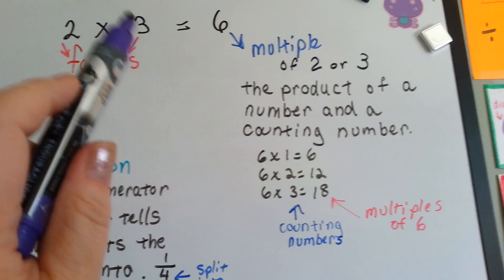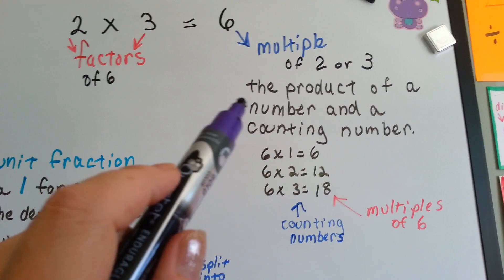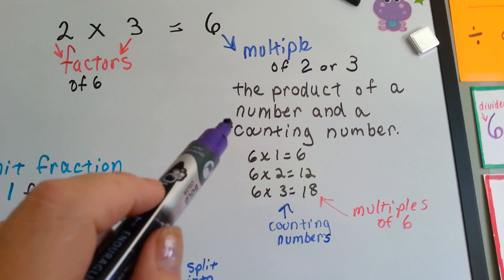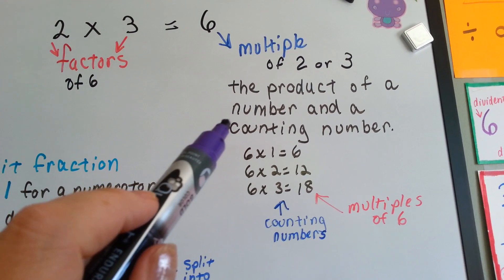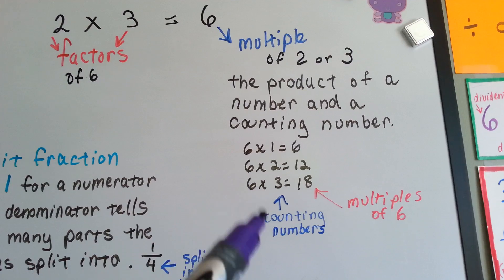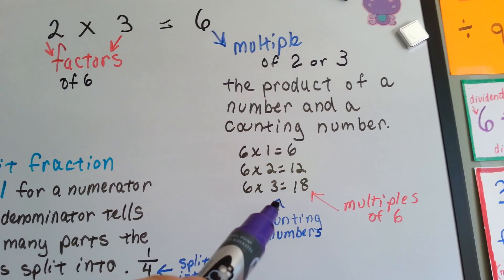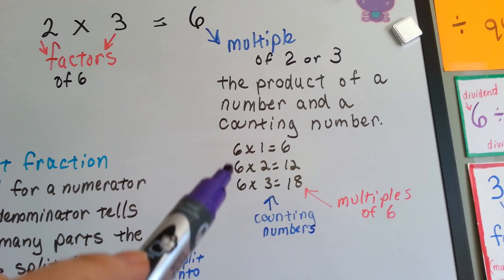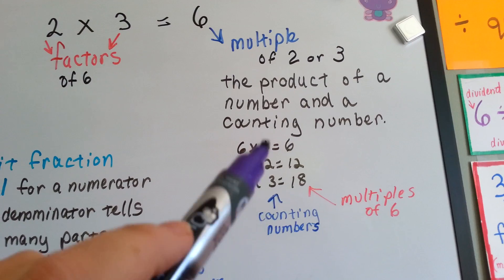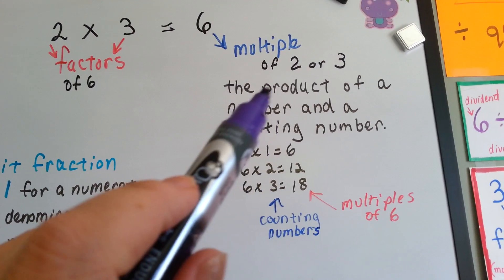It's a multiple of 2 or 3 because it's the product, the answer, of a number, 6, and a counting number. So here's the counting numbers, 1, 2, 3, and we have 6 times 1, 6 times 2, 6 times 3 with all these counting numbers. So the multiples are the products.